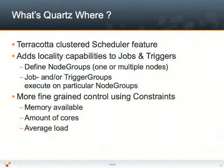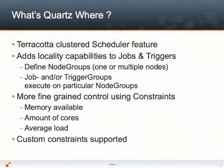Should you require fine-grained control of a job execution, you can use programmatic constraints to evaluate where to execute the job based, for instance, on runtime properties of your nodes like memory available, amount of cores, or the average load on the machine. Should the bundled constraints not be sufficient to support your use case, you can resort to custom constraints providing only a little bit of development.